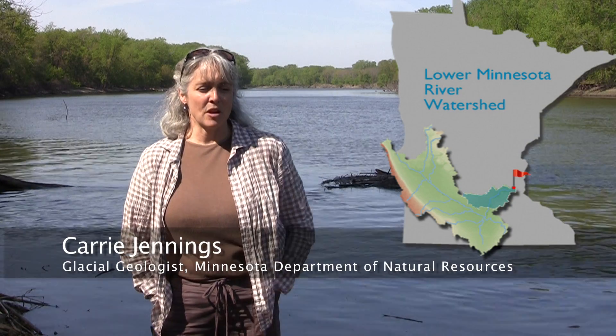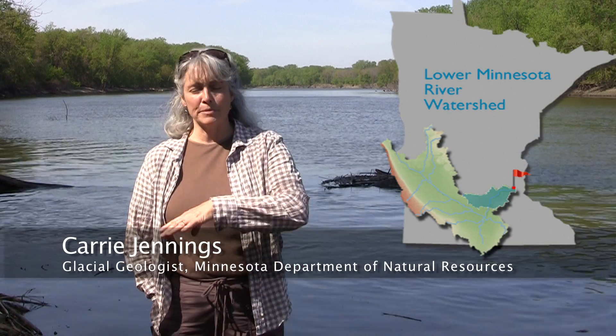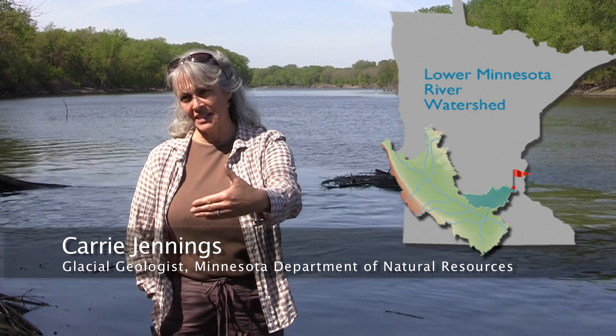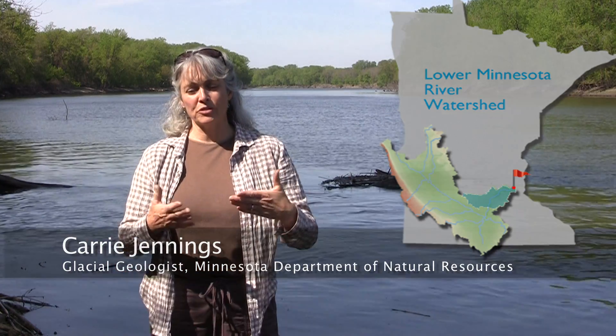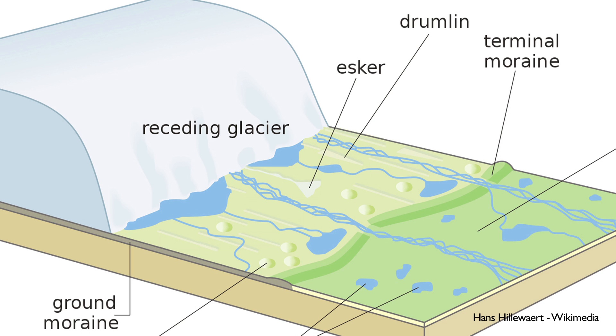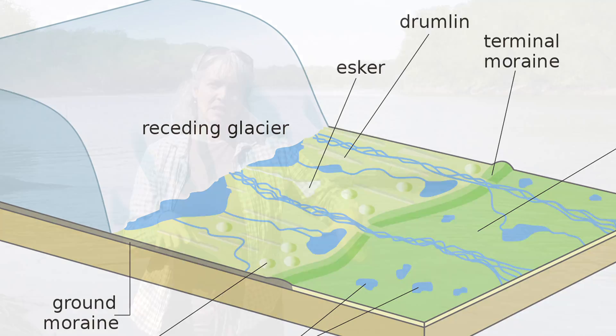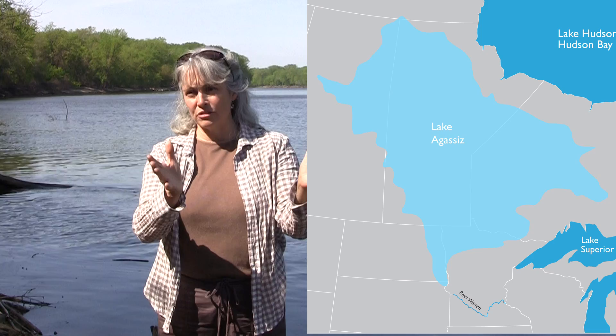A glacial moraine is a ridge of sediment and rock that's pushed up in front of an advancing glacier. So as a glacier retreats from that area, it's natural for that moraine to start impounding a little bit of water as the ice continues to melt. In this case, it was unusual because the glacier kept retreating farther and farther north, almost all the way up to Hudson Bay in Canada, and the lake just kept growing and growing.